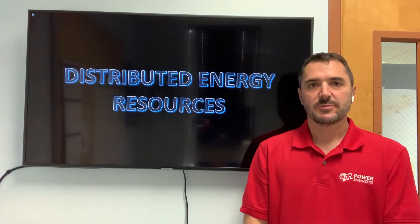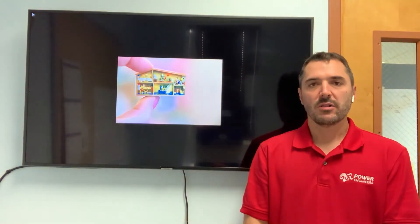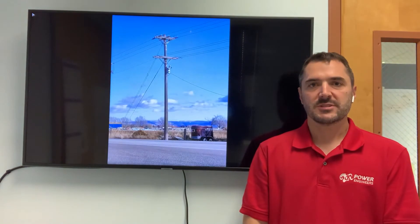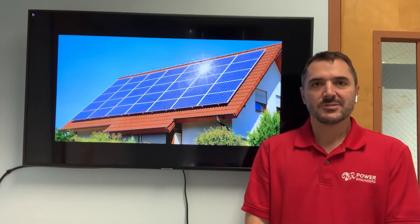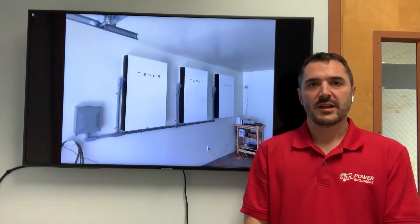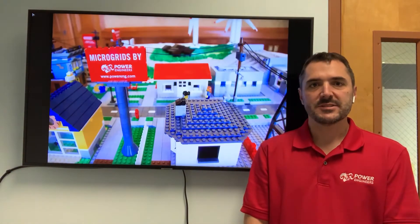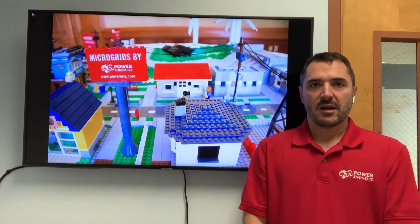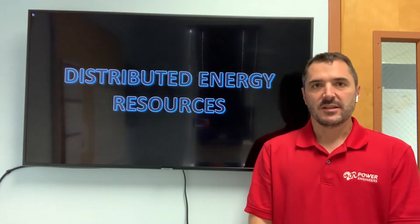DER stands for Distributed Energy Resources, and it is defined as a small electric resource connected to the distribution grid. So obviously, generation like rooftop solar, small cogeneration plants, batteries, and a combination of these in a microgrid are classified as DER.